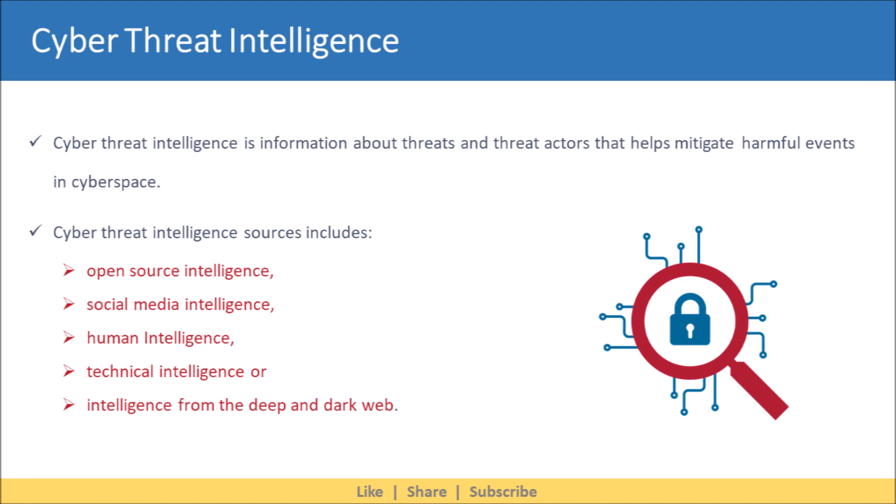Let's understand the three overarching types of threat intelligence. First, tactical intelligence — the technical intelligence including indicators of compromise, such as IP addresses, file names, or hashes, which can be used to assist in the identification of threat actors.